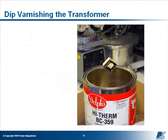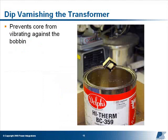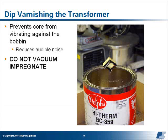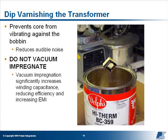Dip varnishing a transformer core will prevent the core from vibrating against the bobbin and will reduce audible noise. When specifying a varnishing technique with your vendor, always use dip and do not vacuum impregnate. Vacuum impregnation significantly increases winding capacitance and will reduce efficiency and increase EMI.